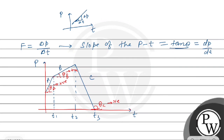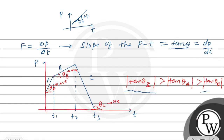If we take just the magnitude, tan theta of section C is greater than tan theta of section A, and tan theta of section A is greater than tan theta of section B. So the maximum force corresponds to section C, and the minimum force corresponds to section B.